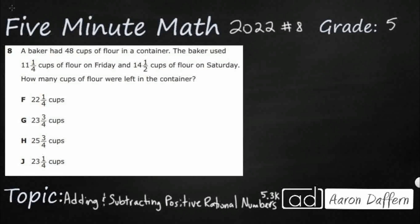Hello and welcome to 5-Minute Math. Today we are looking at the 5th grade concept of adding and subtracting positive rational numbers. This is standard 5.3k in the great state of Texas and we are using item number 8 of the 2022 released STAAR test.